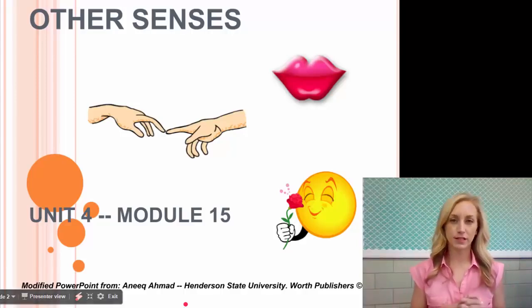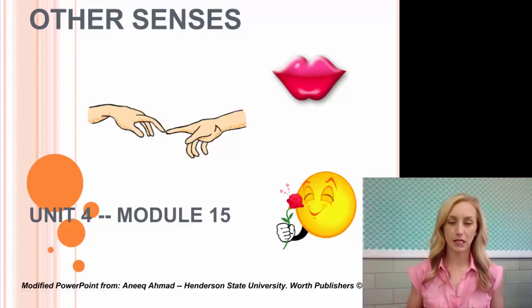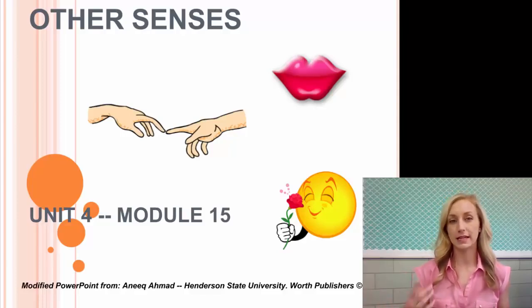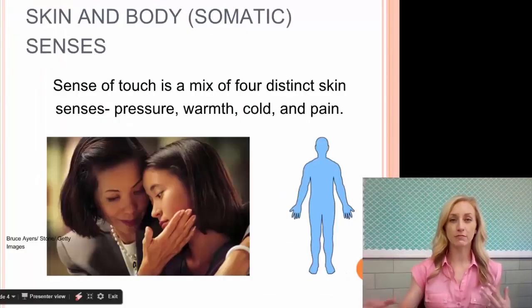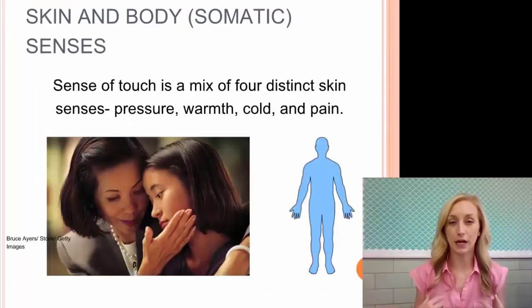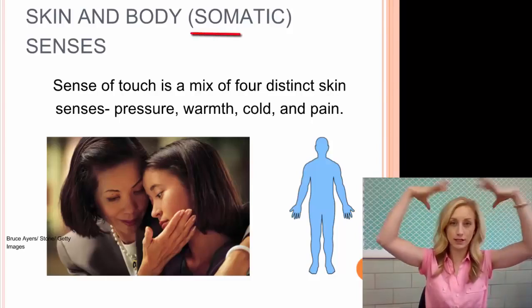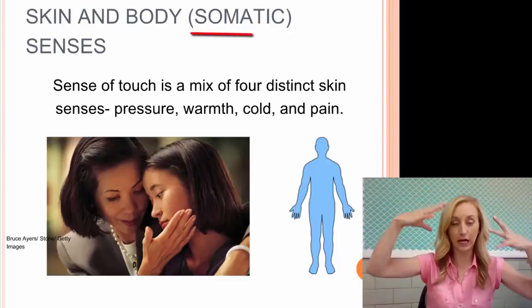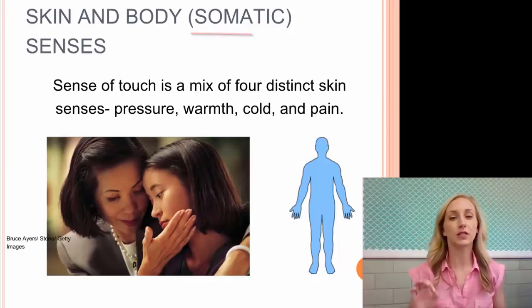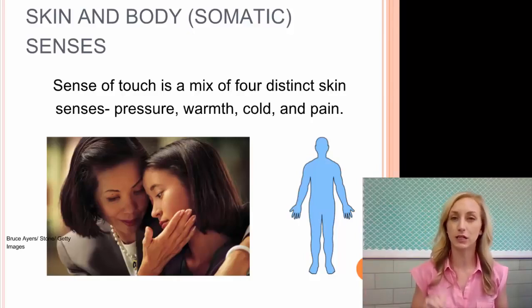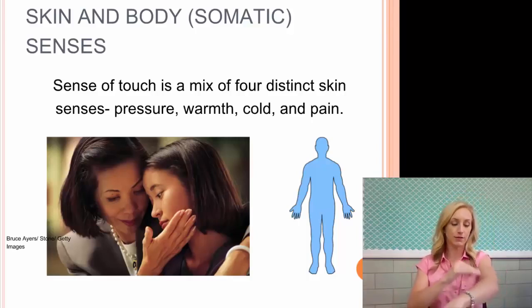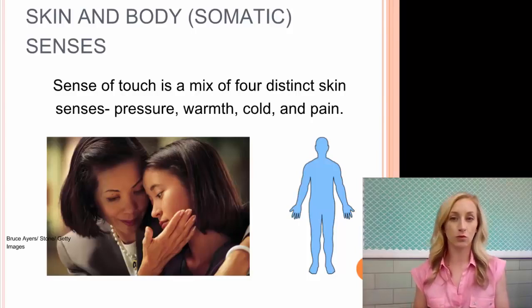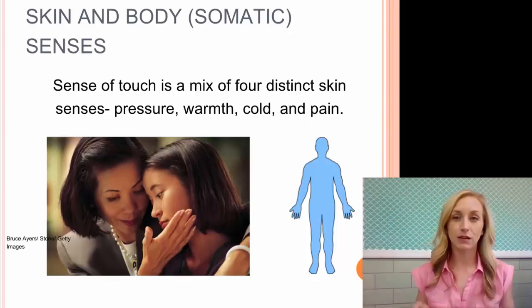We're moving on to our next set of notes in unit 4 on sensation and perception, and this one is not about vision or hearing, but our other senses, which include smell, taste, and touch. Our somatic senses refer to our skin and body, processed in the somatosensory cortex in the parietal lobe. Our sense of touch is a mix of four distinct skin senses that you need to memorize: pressure, warmth, cold, and pain. We have very distinct skin senses for each of those.